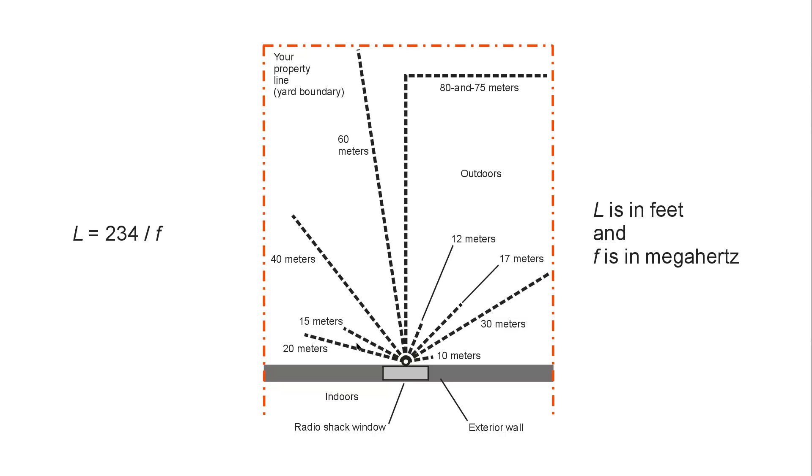In this case, all of the bands from 10, 30 meters, 17 meters, 12 meters, 80 and 75, 60, 40, 15 and 20 meters, all of these different bands, you run a quarter wavelength wire according to the formula.